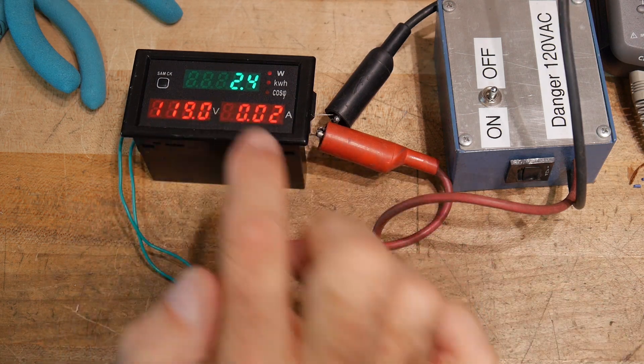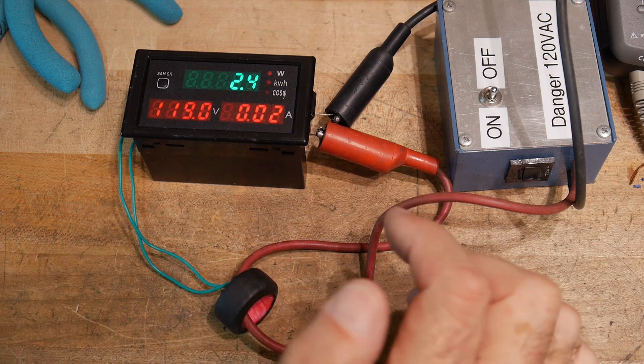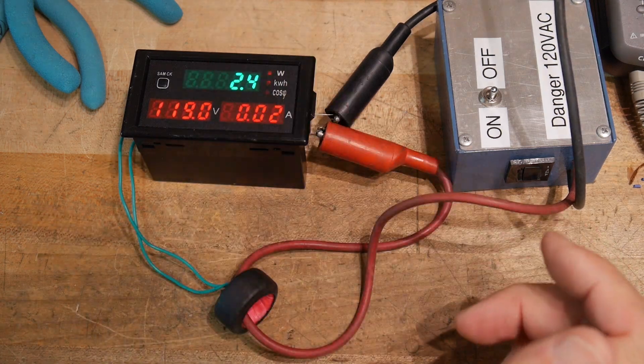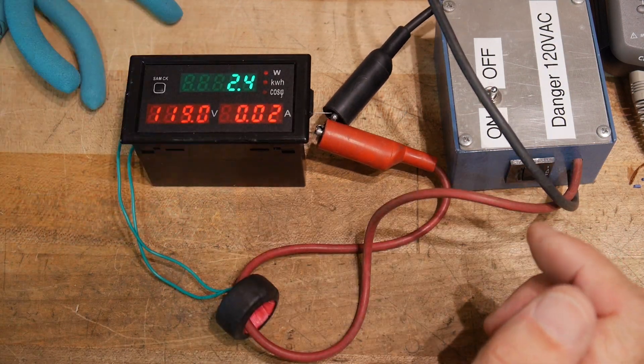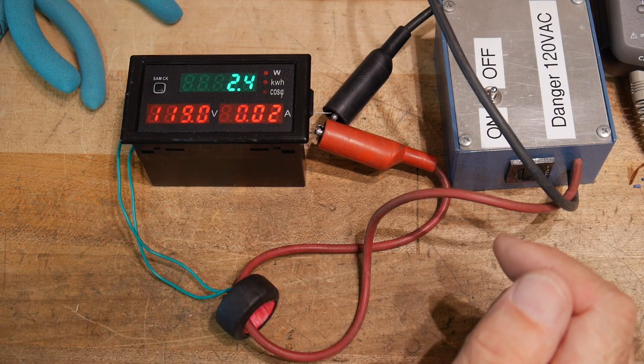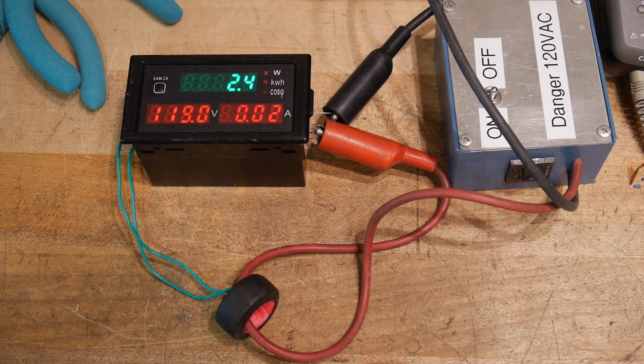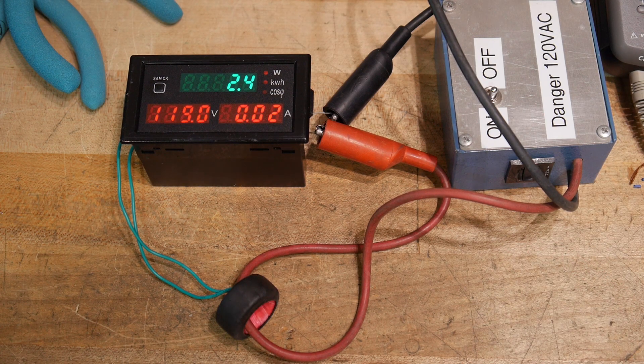119 volts, 0.02 amps, a good resolution. So it's 2.4 watts. Wow. That's a lot of watts just for a tiny little box. I wonder if that's really true or not. Let's measure the volts here.